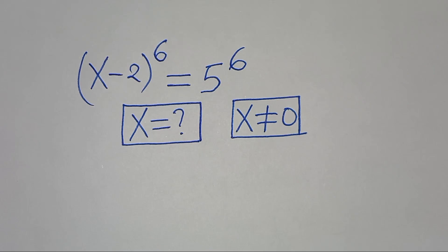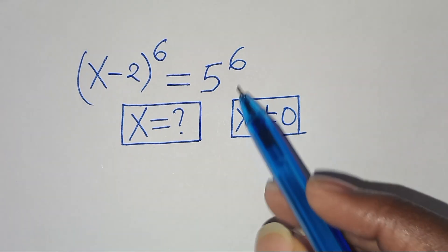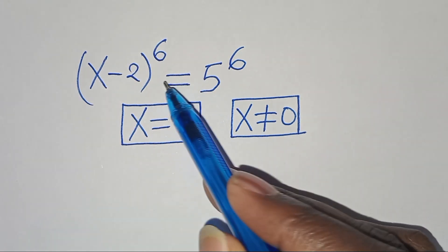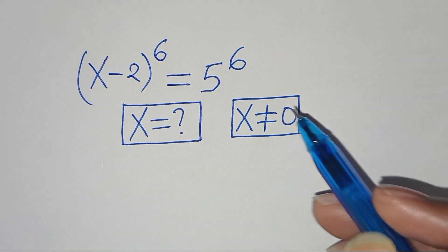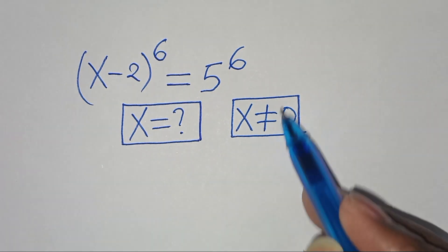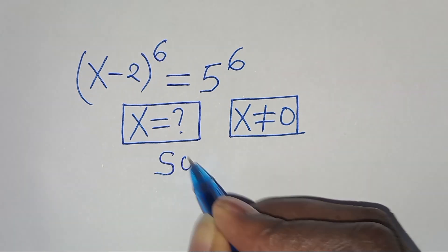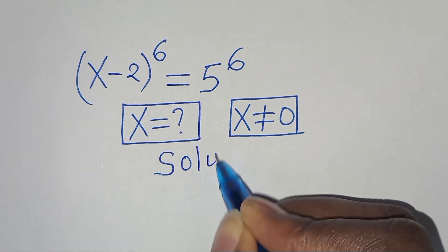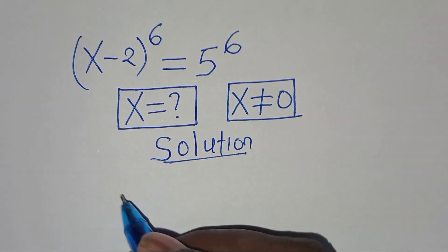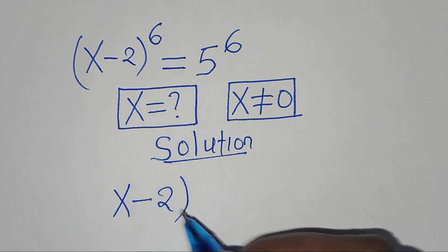Welcome everyone. We're going to solve this algebra problem: (x minus 2) to the power of 6 equals 5 to the power of 6. We need to find the values of x, given that x is not equal to 0.